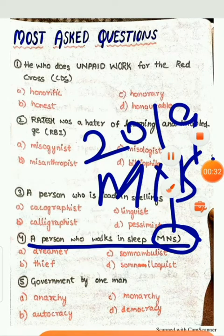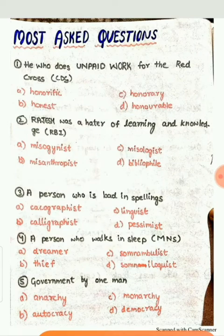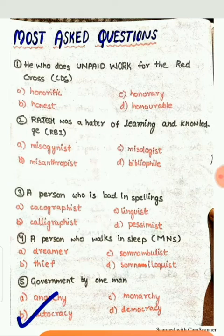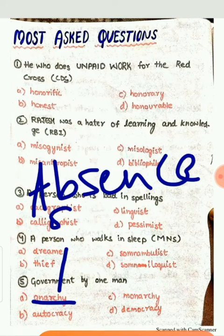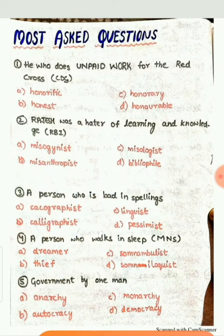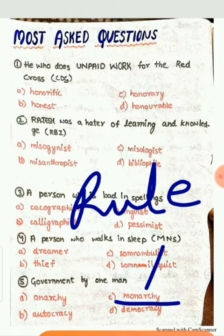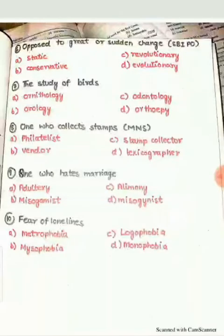Our fifth question is: Government by one man. Anarchy means absence of government — where no one's rule exists, i.e., no government. Monarchy means government by a king or queen. Democracy — the best example of democracy is India.